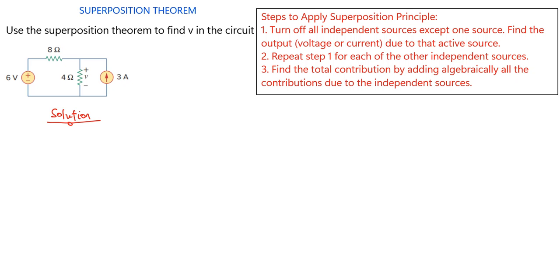What this means is that first of all, we should consider one of the independent sources acting alone, then find the voltage or current due to that source, and then repeat that for all the sources in the circuit. Then we should combine the total effect to find the total voltage drop or current on that particular element in the circuit.